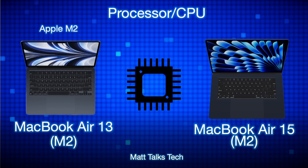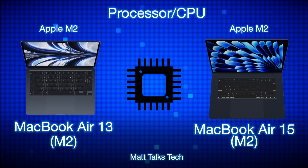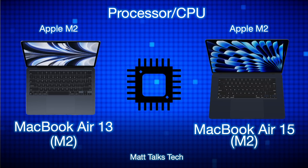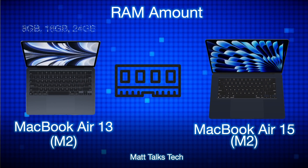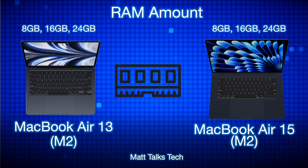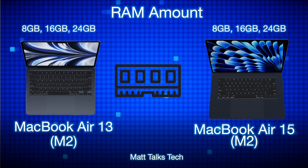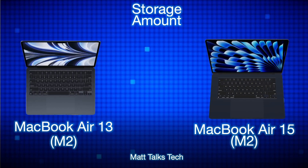For the processor and CPU, both the 13-inch and 15-inch MacBook Airs have identical M2 chipset options — either an 8-core or 10-core CPU, with the same GPU core options available. Performance is going to be exactly the same on both. For RAM, you get the same options too: standard 8GB, or you can upgrade to 16GB or 24GB on either machine, with identical performance.